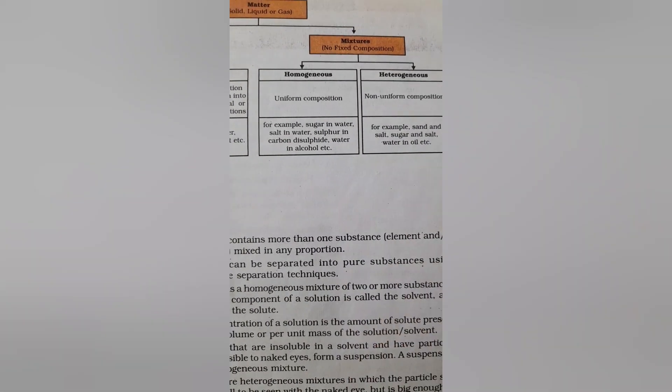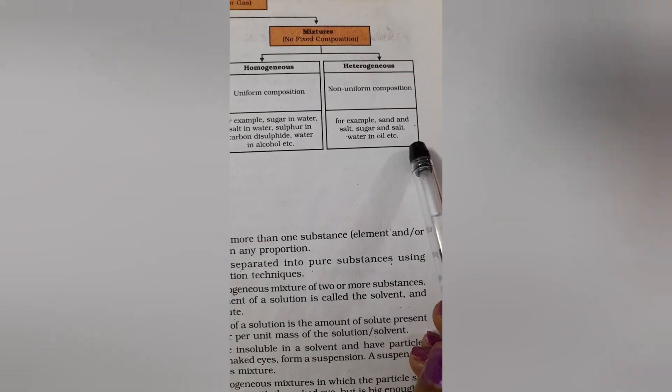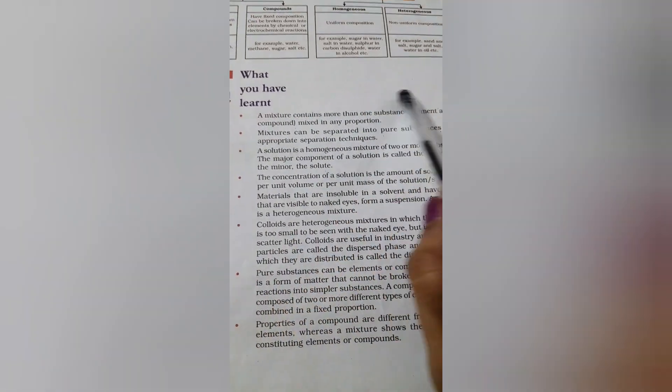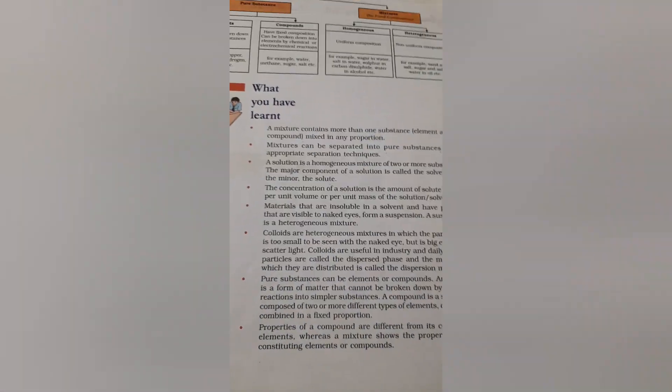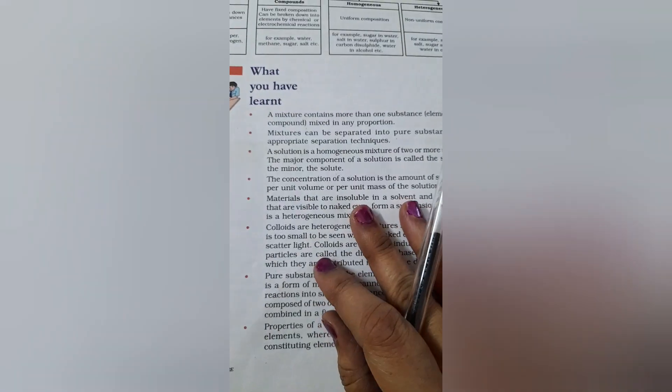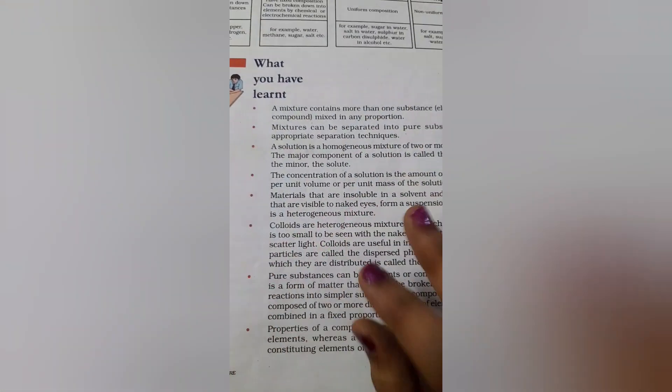Example sugar in water, salt in water, all these we have learnt already. Heterogeneous: sand and salt, sugar and salt, water and all that. Another important thing I have to tell you is what you have learnt is given as a summary here. All of you should surely go through this summary because it is easily explained in simple words or sentences.